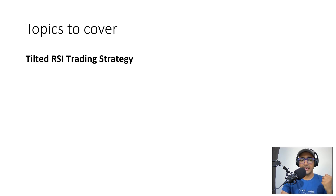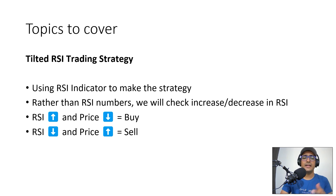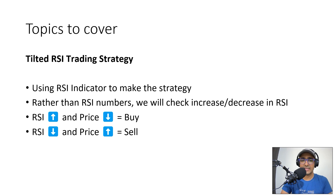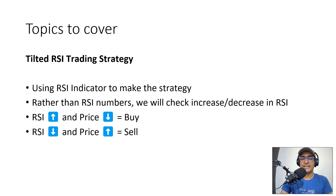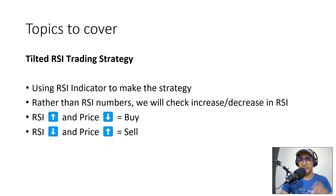We will talk about the tilted RSI trading strategy and understand how it works. We'll be using RSI indicator Pinescript code, which is already present in the TradingView platform — we'll just copy and paste it into our strategy. We'll have to make some changes. Rather than just RSI numbers, we will check the increase and decrease in RSI numbers. So if RSI increases and price decreases, it's a buy condition. If RSI decreases and price increases, it's a sell condition. There are a couple more things included in the buy and sell conditions that we'll see while writing the code.